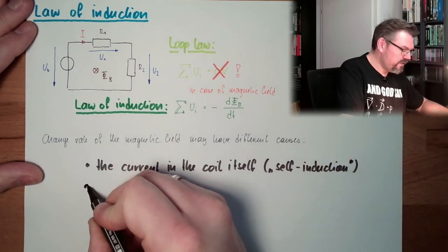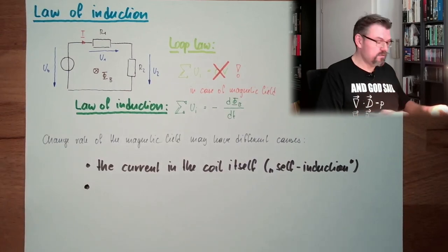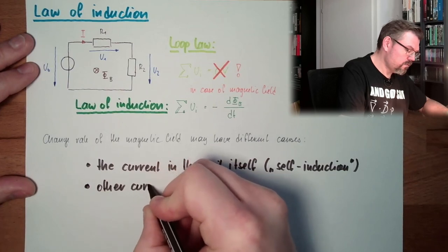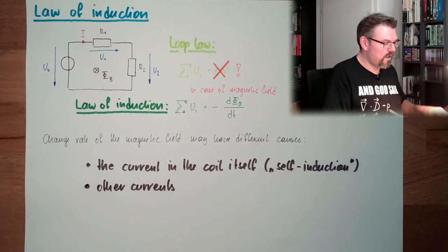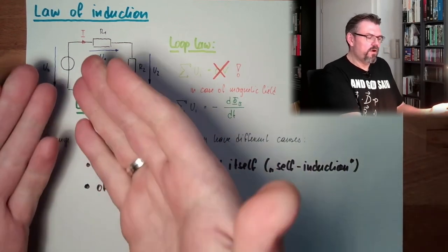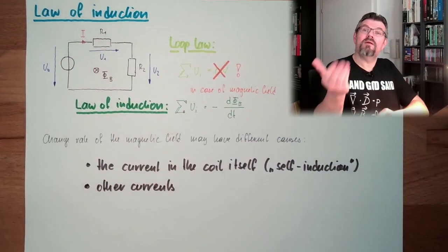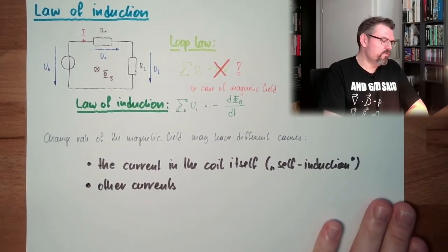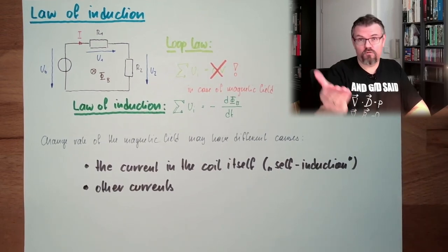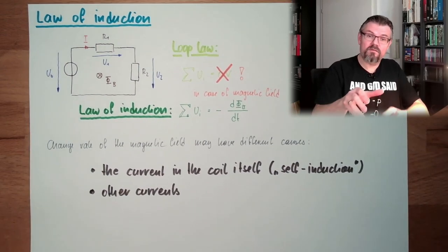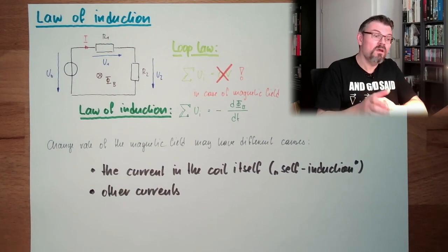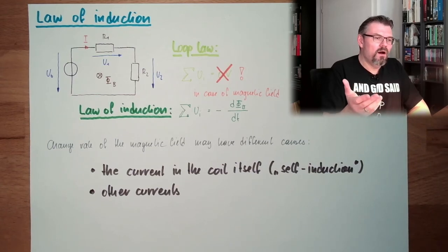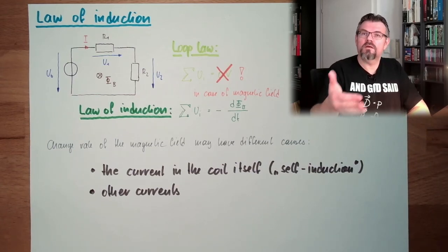Another possibility would be other currents. It must not be the current inside my loop, it can be a current outside. This is happening, for instance, when you are charging your phone, wireless charging your phone. Then there is a current, and in your phone there is voltage inducted.